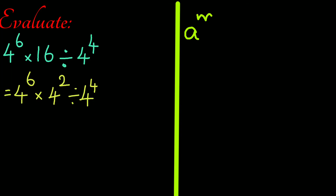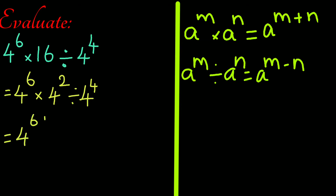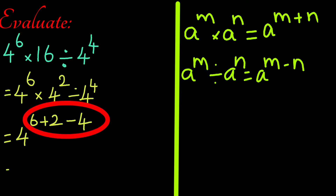Whenever we multiply the common base, add the powers. Whenever we divide the common base, subtract the powers. So we get 4 to the power 6 plus 2 minus 4. Simplifying this, we have 4 to the power 4.